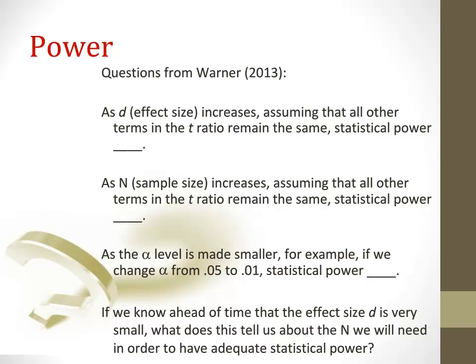Based on what we just talked about and calculating power based on effect size and sample size, let's go back to the final question that we were discussing from Warner. The question was, if we know ahead of time that our effect size is going to be very small, what does this tell us about the n that we need in order to have adequate statistical power? That is, what do we know we need to do to have a power of .8 if we know we're going to have a small effect size? So think back to that table that I showed you a few slides ago.